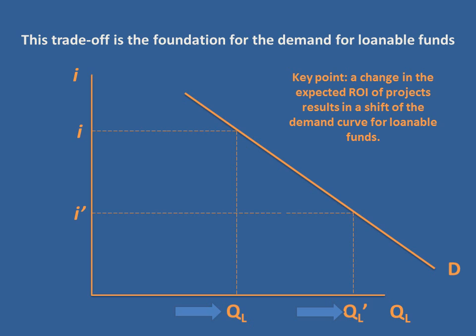If the expected return on investment increases, that would increase the overall demand for loanable funds at all levels of interest, shifting the demand curve to the right. The opposite is true as well — if we saw the expected rate of return on investment decrease, we would see the demand curve shift to the left.